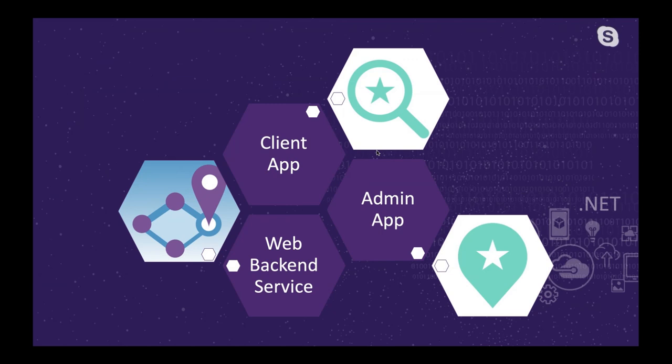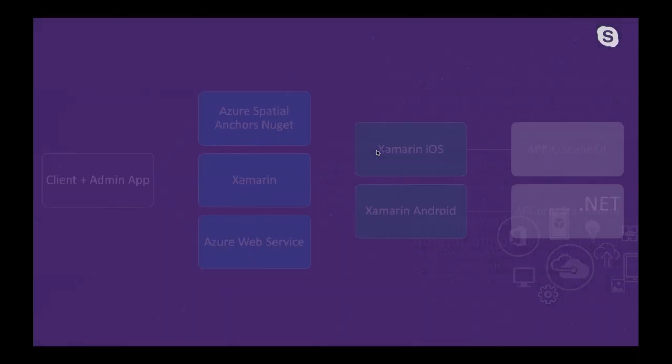What drives this whole app? There are three basic parts: the client app, which is what you'd give to anyone playing the game to hunt for virtual objects; the admin app, which lets you drop or hide virtual objects for everyone to find; and then the web backend service, which includes the Azure Spatial Anchor service itself and the Cosmos DB service that drives the sharing and storage of the different anchor points.